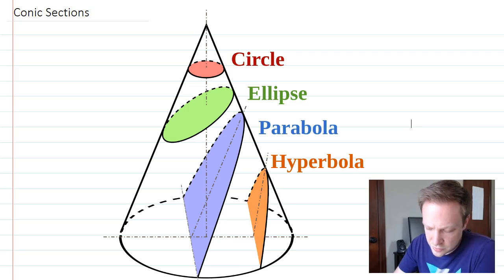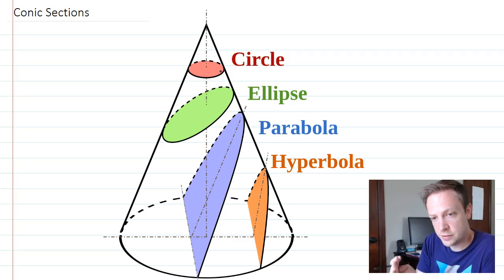For each one of these shapes, you're going to have an equation that goes with it and some particular properties that are really useful. But what the Greeks noticed very early on was that as they studied circles, ellipses, parabolas, and hyperbolas, they all are sections or slices of a cone. Depending on the angle that you slice, you're going to get a different shape.